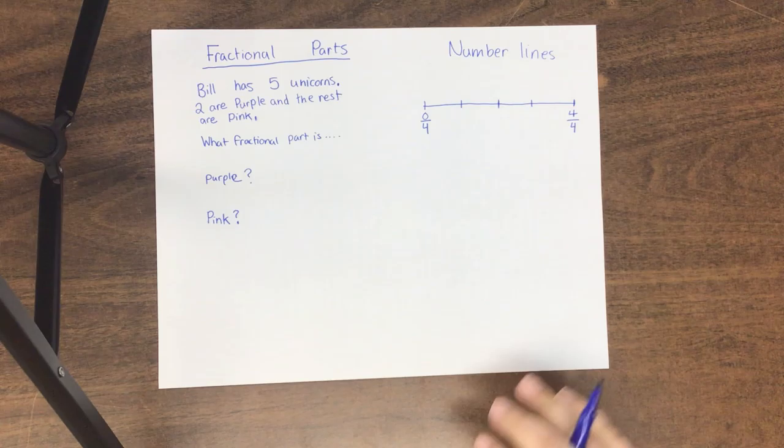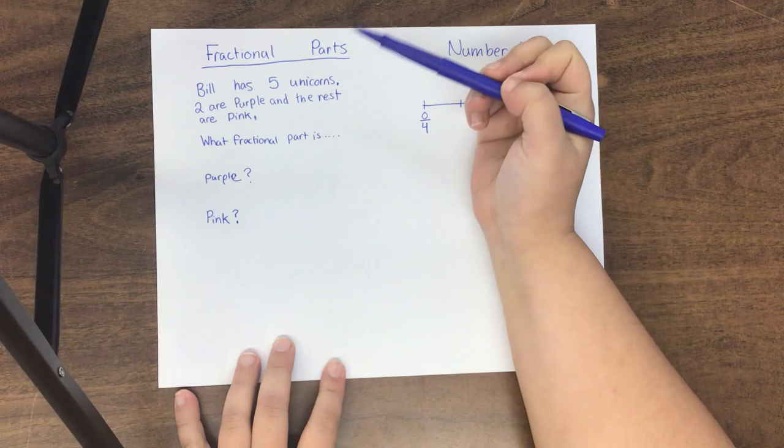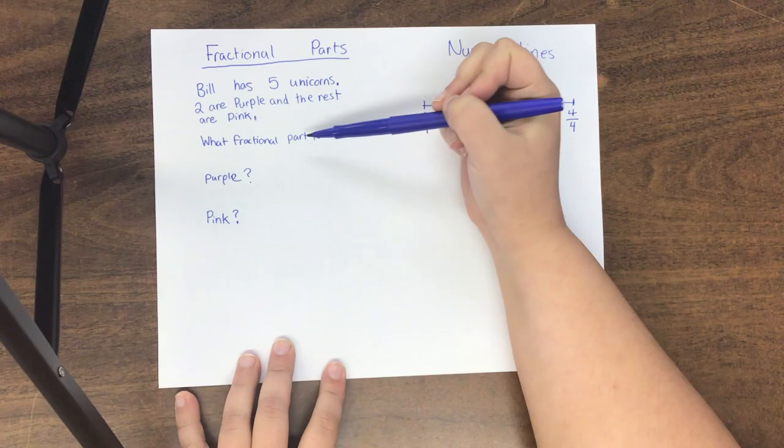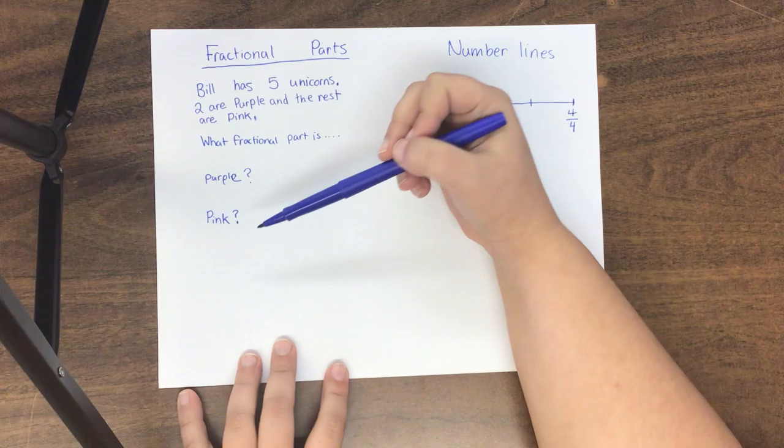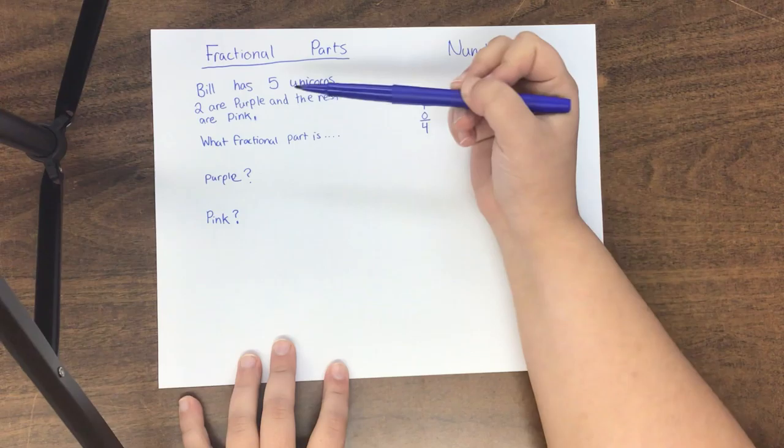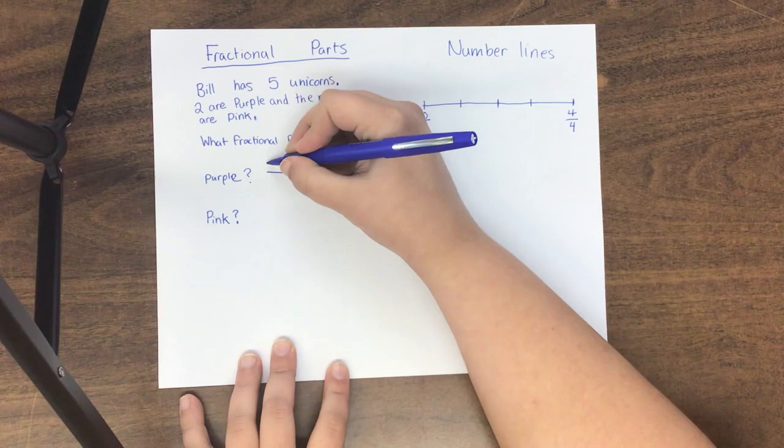I don't think we've done a word problem with fractional parts yet. They're not as hard as they sound, so let's just give it a try. Our question says: Bill has five unicorns. Oh, how nice! Two are purple and the rest are pink. What fractional part of the unicorns is purple and what fractional part is pink? So basically, it's asking us to tell how many unicorns are purple or pink using a fraction instead of numbers like this.